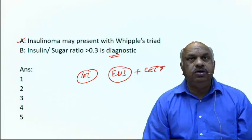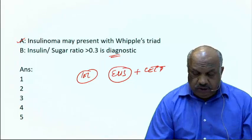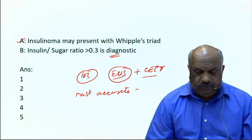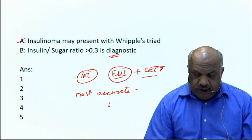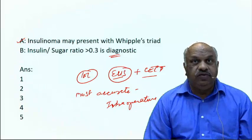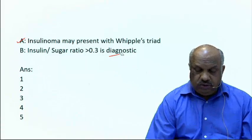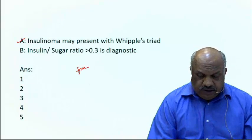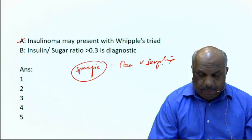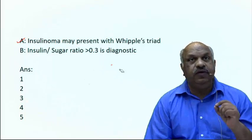Radiologically, the investigation of choice is endoscopic ultrasound, normally combined with CT scan. CT may not always show the tumor, but endoscopic ultrasound is especially useful for head and body tumors — not ideal for the tail. Together, endoscopic ultrasound and CT scan are quite accurate. The most accurate investigation overall is intraoperative ultrasound, but it is not the investigational choice since we wouldn't open the abdomen just for diagnosis. The most specific test is pancreatic vein sampling for insulin.